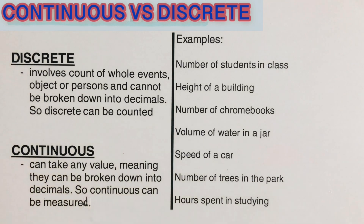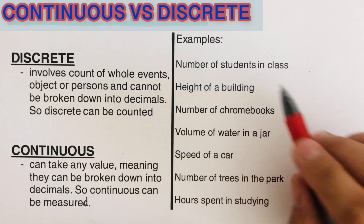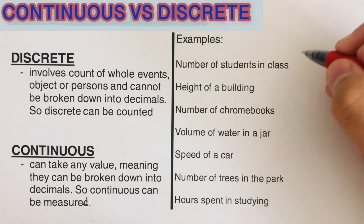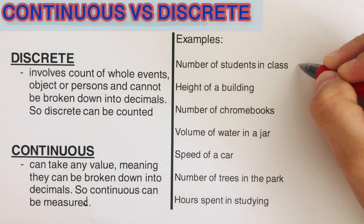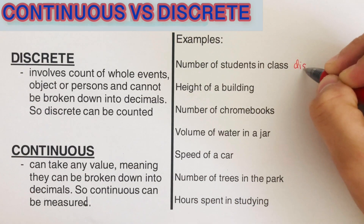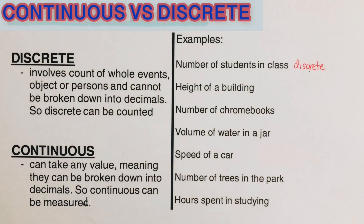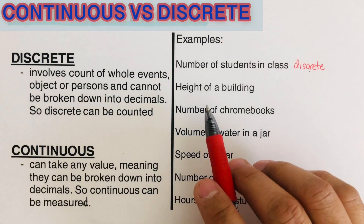So discrete can be counted, while continuous can be measured. Let's take some examples. The number of students in class is an example of discrete, because we can't have like 35.5 students — what does the 0.5 mean? So they come in whole numbers.